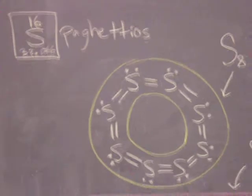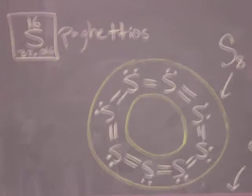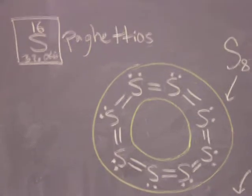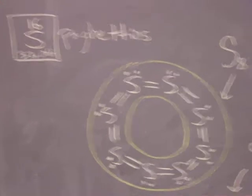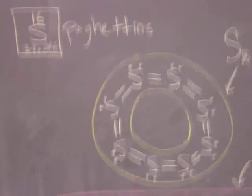This is the SpaghettiOs demonstration for sulfur. Elemental sulfur is most stable in the S8 allotrope form. So that's a ring of eight sulfur atoms covalently bonded together.